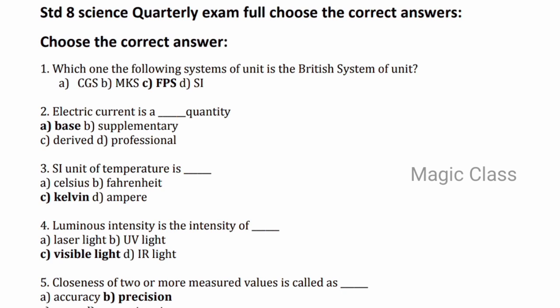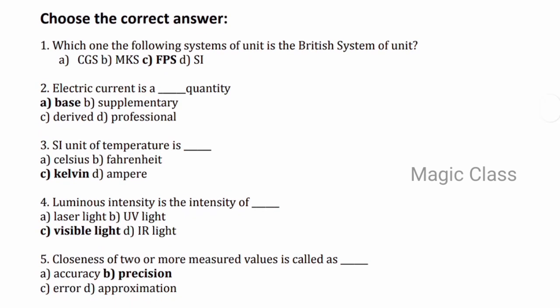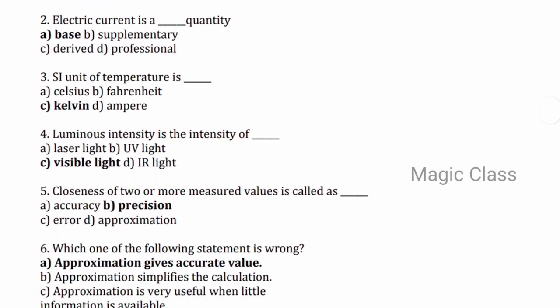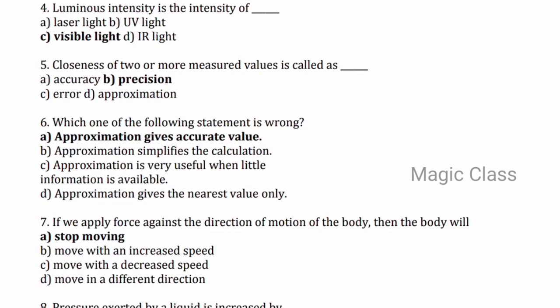Coming on to choose the correct answer: Question 1 — which one of the following system of units is the British system? Answer: FPS. Question 2 — electric current is a base quantity. Question 3 — SI unit of temperature is Kelvin. Question 4 — luminous intensity is the intensity of visible light. Question 5 — closeness of two or more measured values is called precision. Question 6 — which statement is wrong? Answer: approximation will give accurate value — that is the wrong statement.